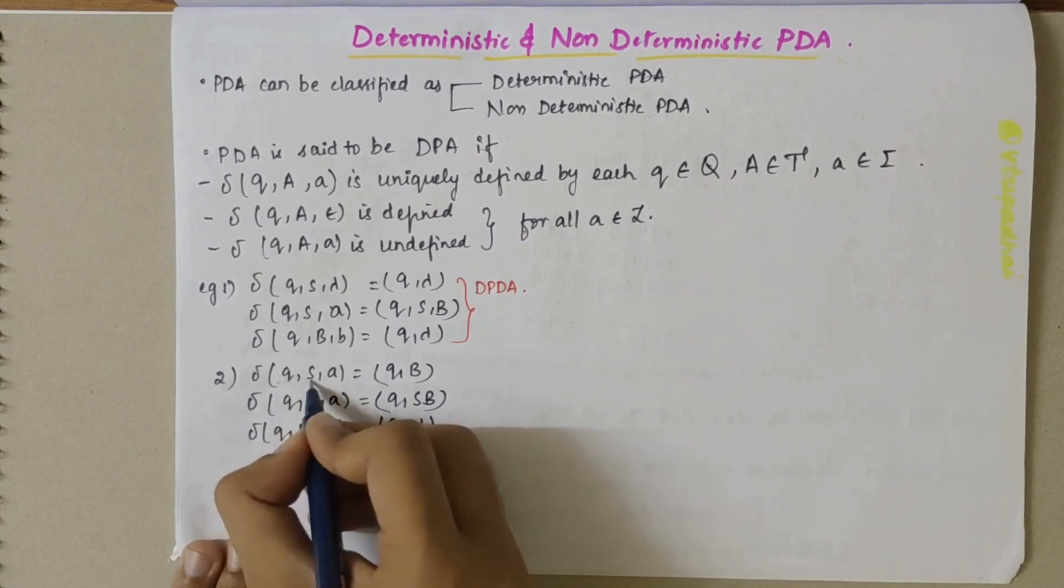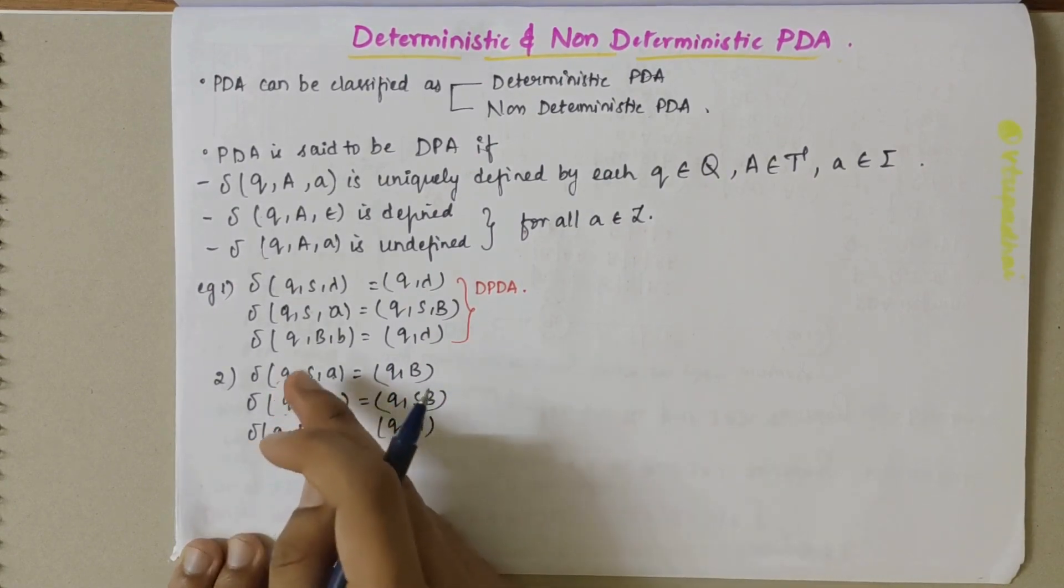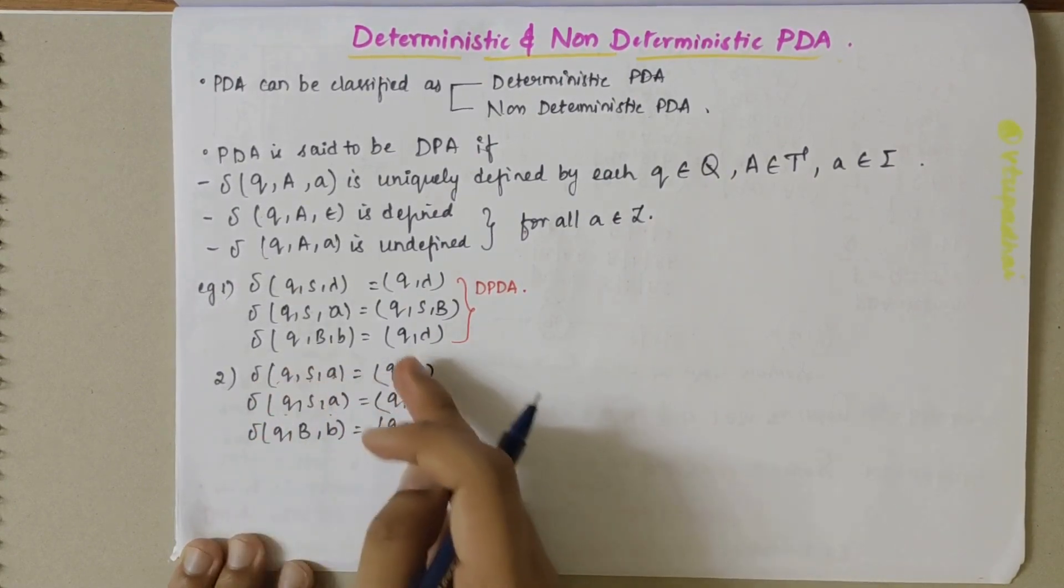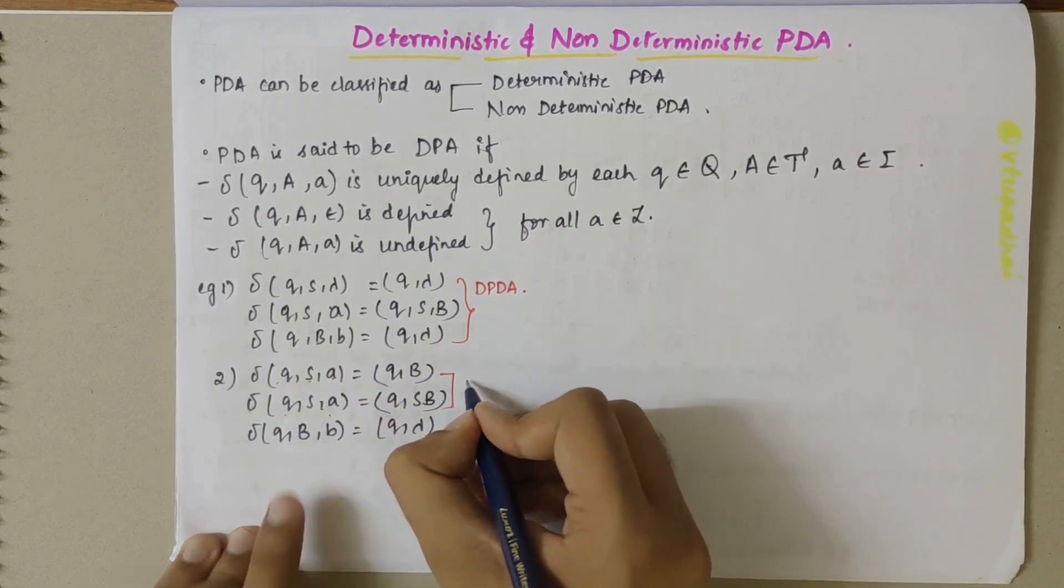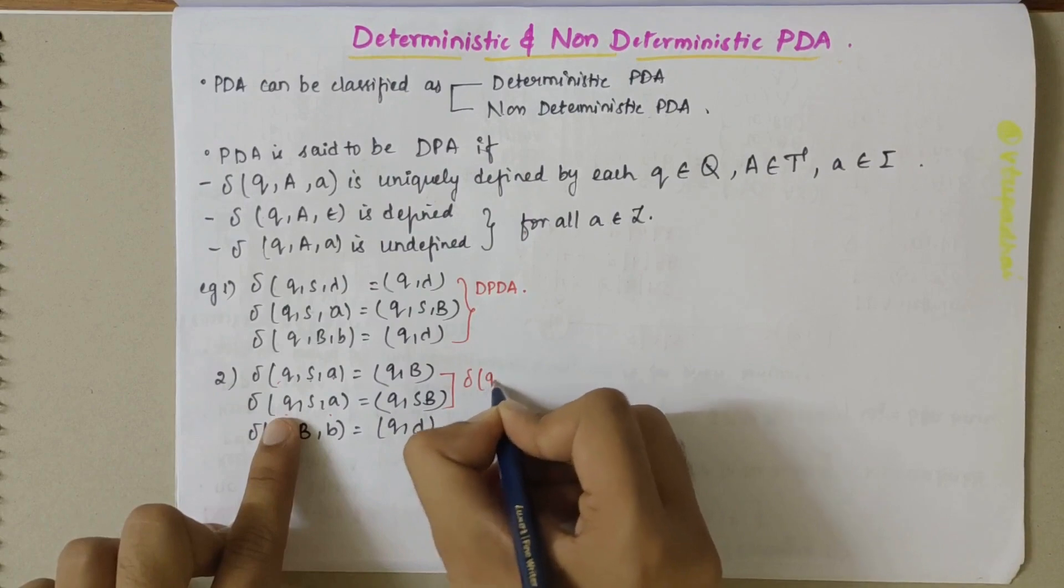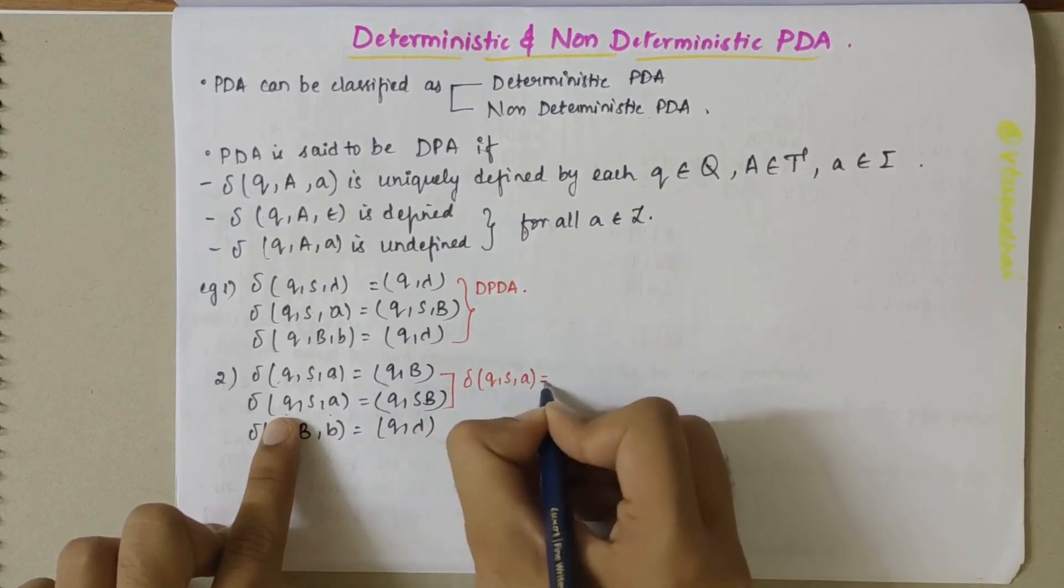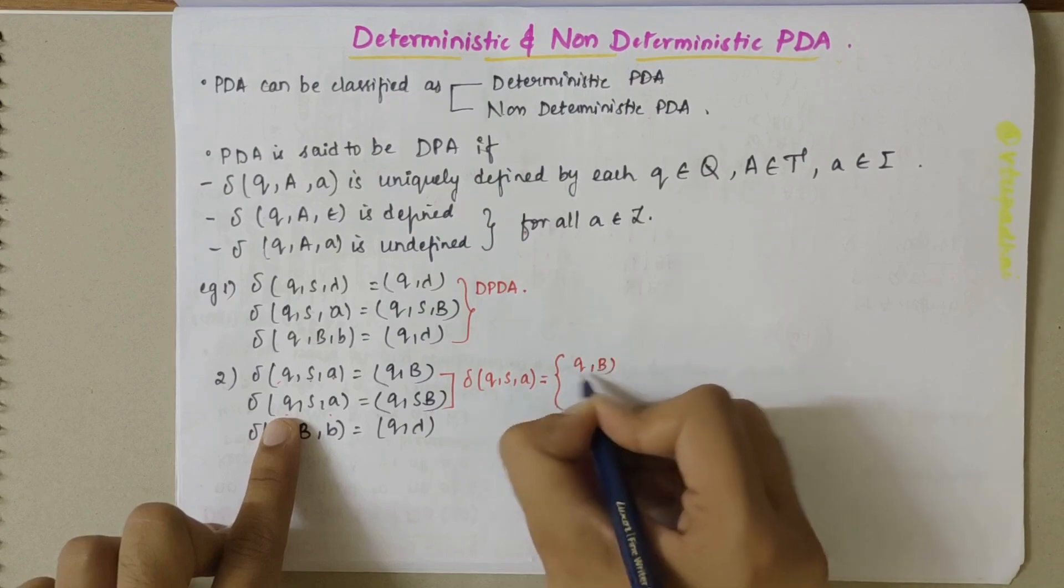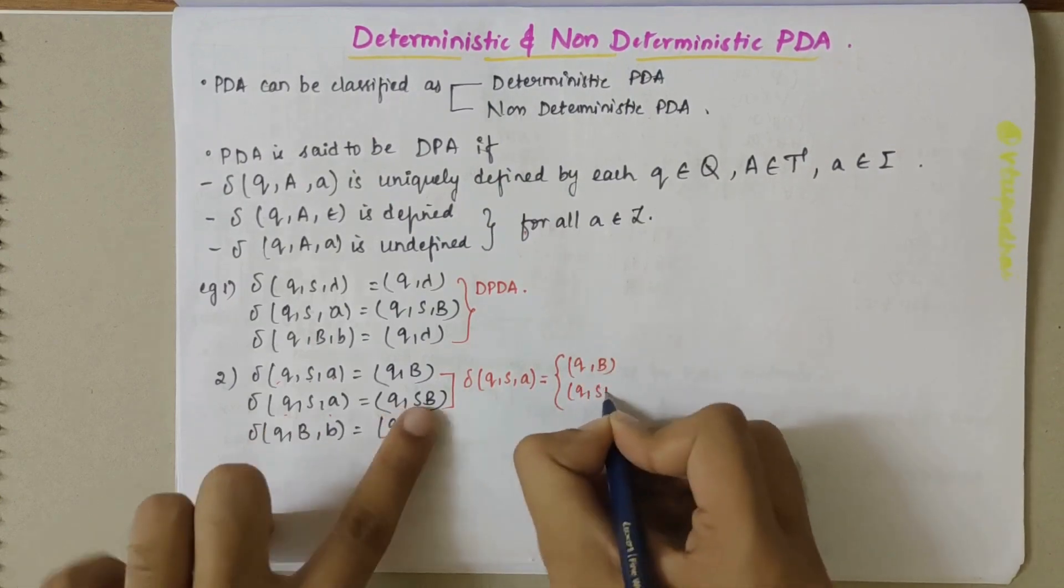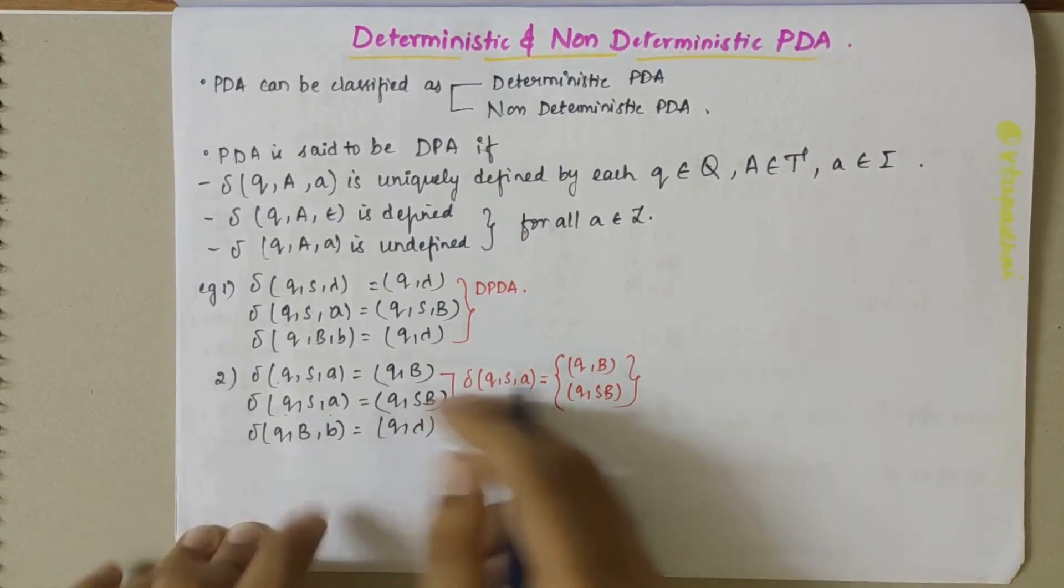And if you look at here Q, S, A, Q, S, A, for one transition there are two possibilities. We can combine it and write transition of Q, S and small A we can get inside the curly braces we can write Q, B and Q, S, B.